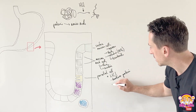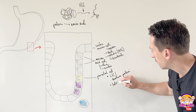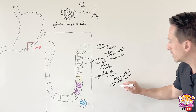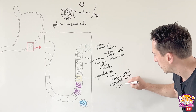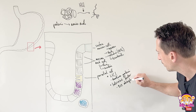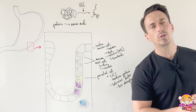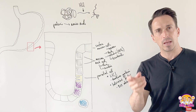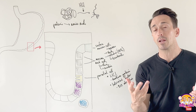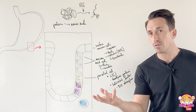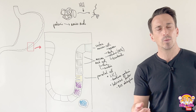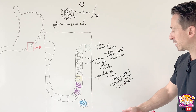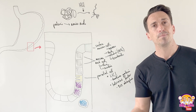Parietal cells don't just release hydrochloric acid — they also release intrinsic factor. Intrinsic factor allows us to absorb B12 in the intestines. Why do we want to absorb B12? We need B12, also known as cobalamin — it allows for DNA synthesis. That's important for cells that are rapidly being made, like our red blood cells. If we don't have B12, we don't have red blood cells. If we don't have red blood cells, we don't carry oxygen. And if we don't carry oxygen, we become anemic. So without intrinsic factor, no B12, and that means anemia.